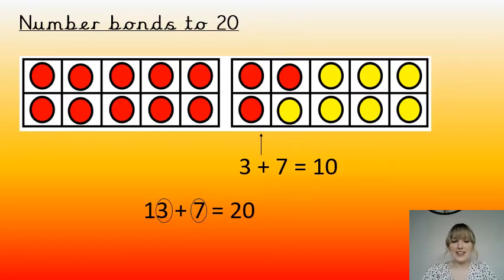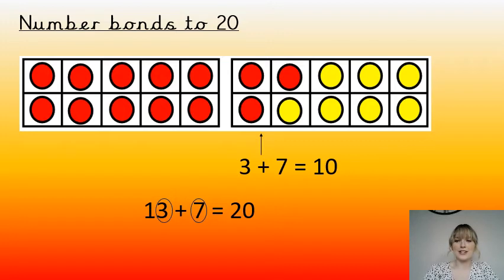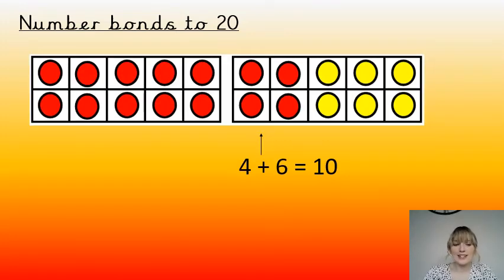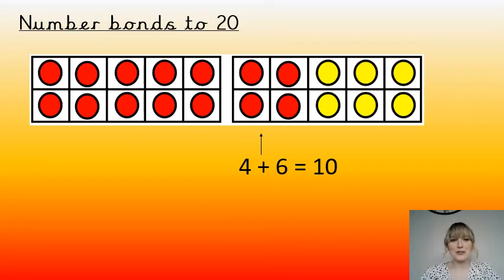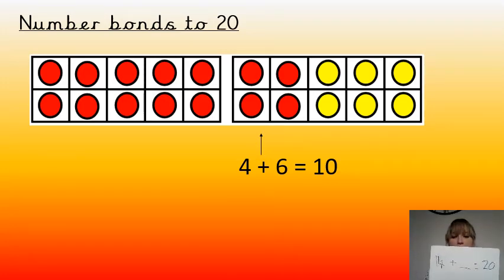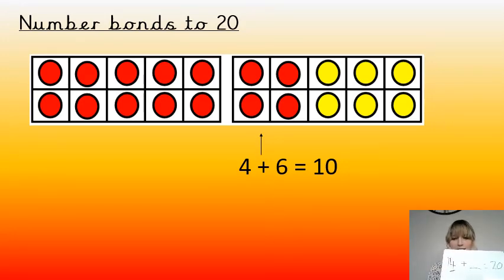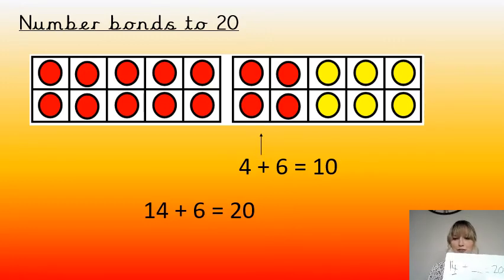Because we know that 3 and that 7 make another 10, and we also know that 10 and 10 is 20. So if we know that 4 and 6 is 10, what makes 20? Count up those red counters — well done if you know it's 14. So 14 add something is 20. We need to find a number bond to 10. We've got 4 there — how many do we need to add to 4 to make another 10? Well done if you know it's 6. So if we know that 4 and 6 is 10, then 14 and 6 is 20.